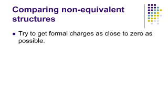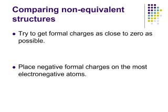If you have a set of non-equivalent structures and you're asked to use formal charge to compare them, there are two guidelines. One is that the best Lewis structures have formal charges as close to zero as possible — your preferred structure will have the lowest formal charges. The other guideline is that your best Lewis structures will have negative formal charges on electronegative atoms. These are the two pieces of information we use to evaluate structures.